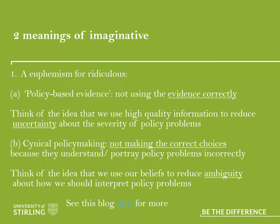Ambiguity refers to the potential for many different ways to interpret the world and interpret policy problems within it. We can produce more information to reduce uncertainty. But to reduce ambiguity, we use our beliefs and values and exercise power to dominate the process in which we understand the world. They're two very different things.